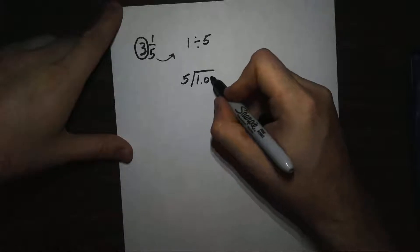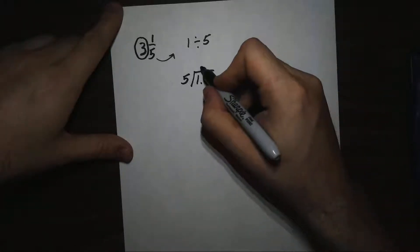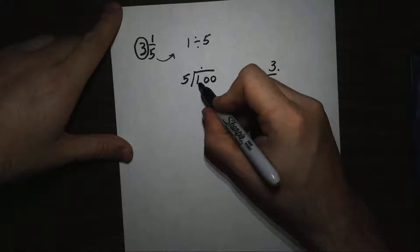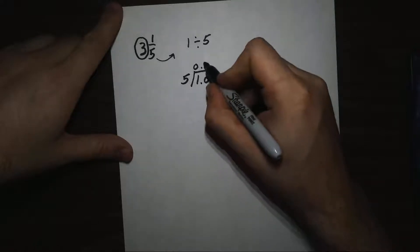Give your 1 the decimal and some zeros, and we can bring our decimal up and start dividing. 5 does not go into 1, but it goes into 10 twice.